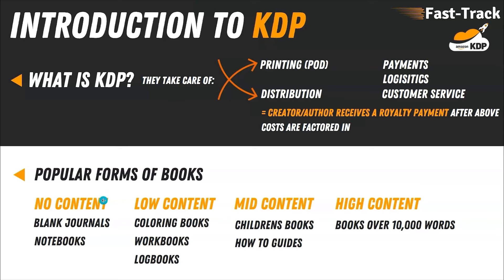Popular forms of books include no-content books like blank journals or notebooks; low-content books such as coloring books, workbooks, and logbooks; mid-content books like children's books and how-to guides; and high-content books of maybe over 10,000 words. I've created books across all these categories — seven high-content books, many mid-content books like children's books, quite a few low-content books, and initially no-content books. No-content books have a small barrier to entry, so most people start there, while fewer people can create a 10,000-word book.